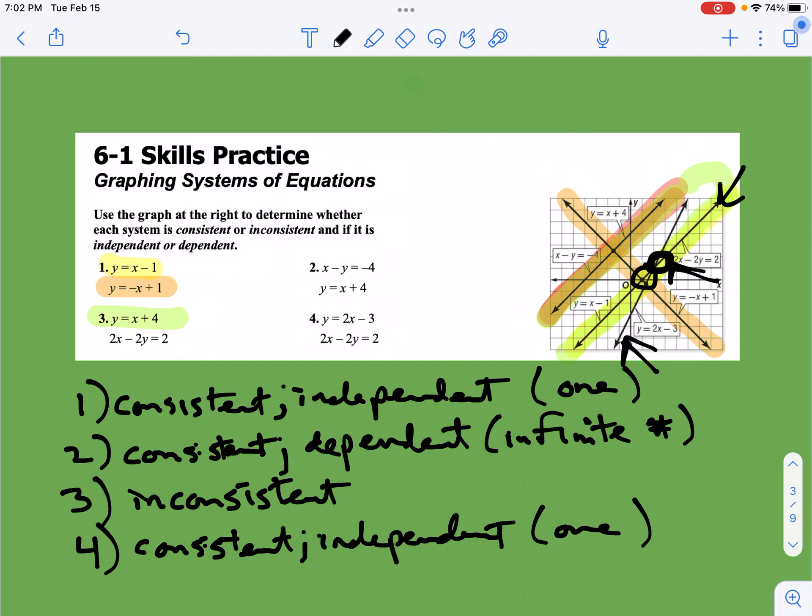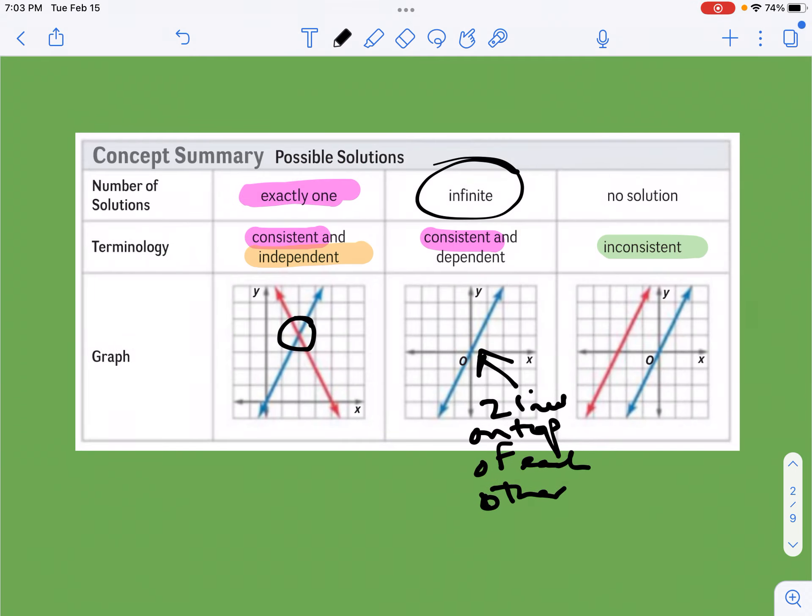So anyway, I hope this terminology helps you moving forward. I know there's a bunch of ALEKS questions that center around this. Pretty much the main takeaway is that you have these three cases: the one solution, the infinite solutions, and the no solutions, and just understanding what those look like. You can reference this as much as you need to, but that's the big idea with this part of the lesson. Next lesson, we will start graphing these.